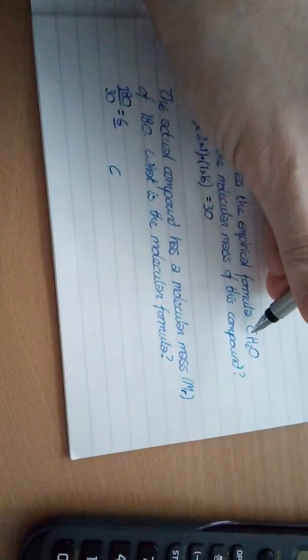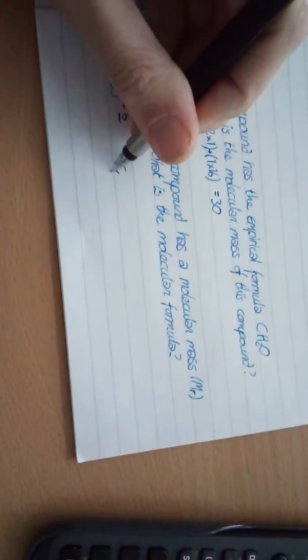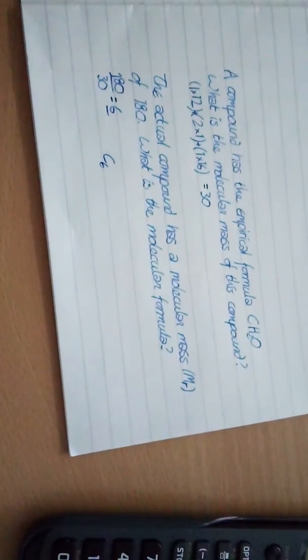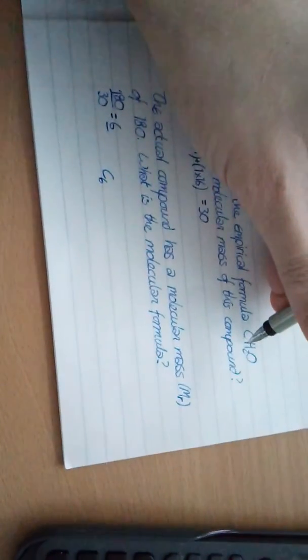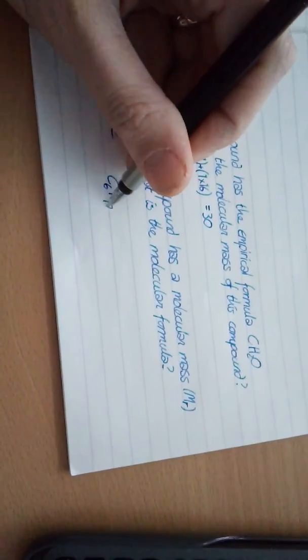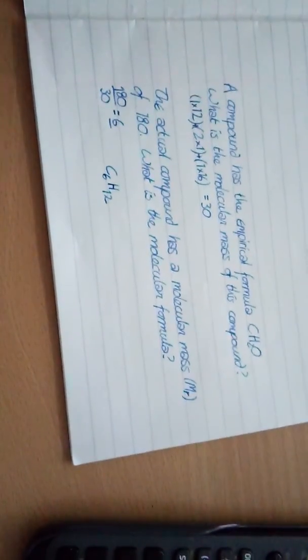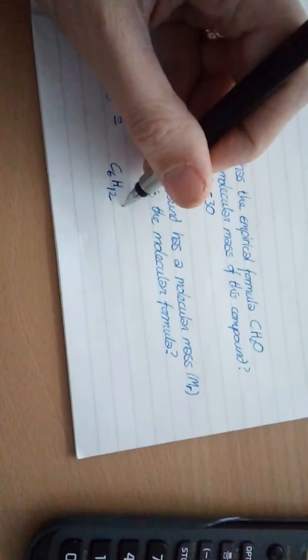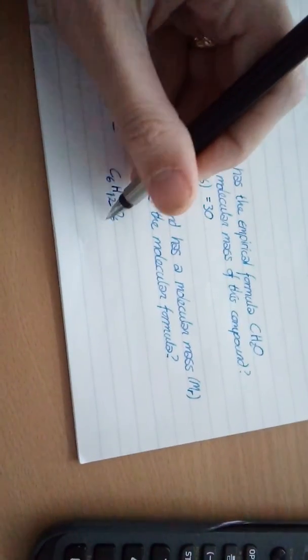So one carbon multiplied by six is six carbons. Two hydrogens multiplied by six is 12 hydrogens. And one oxygen multiplied by six is six oxygens.